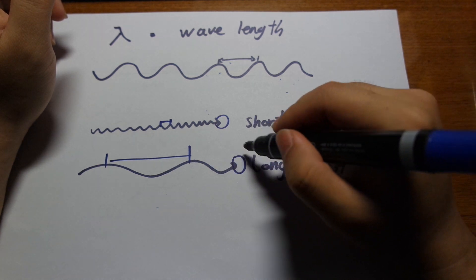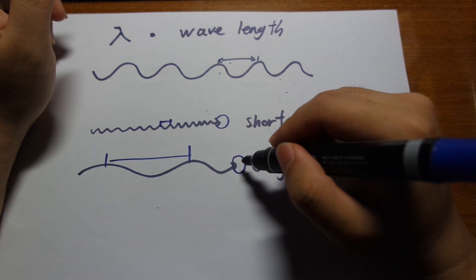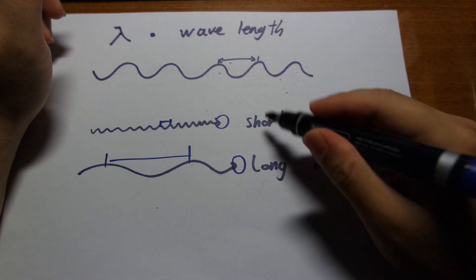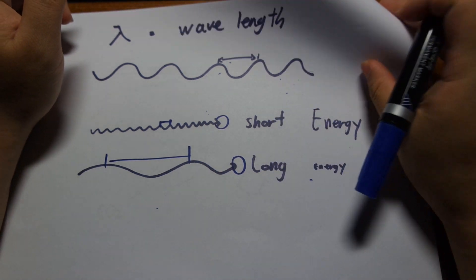Whereas long wavelength light, like infrared, they don't have enough energy to destroy stuff. They just make you warmer. That's all they do. So that's the difference between a long and a short wavelength light.